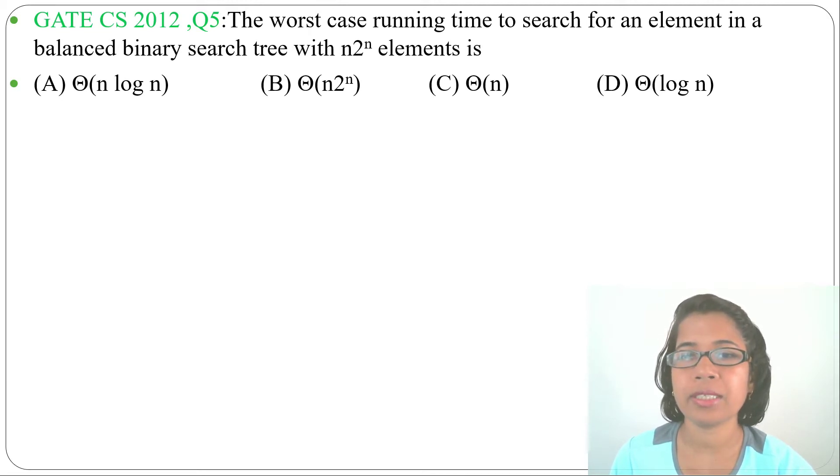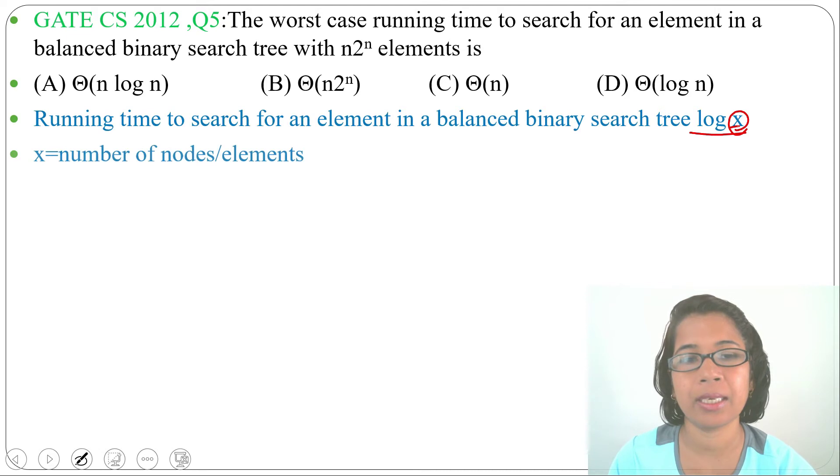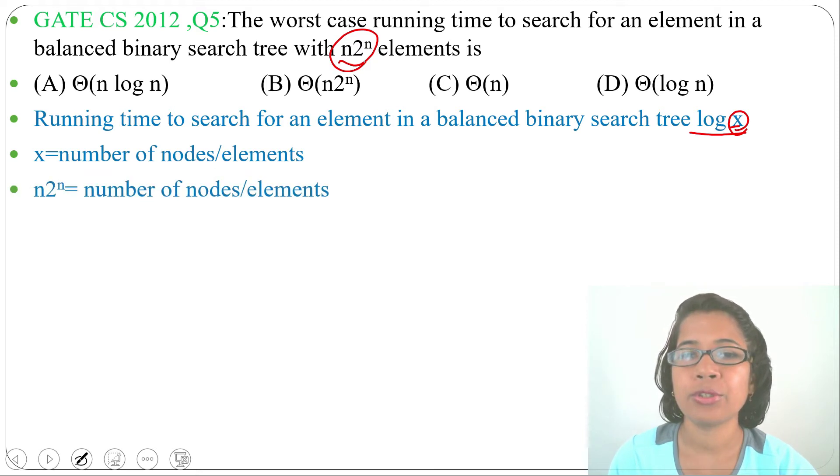We know worst case running time to search for an element in a balanced binary search tree is log of x. What is x here? This x is number of nodes or number of elements. And in the question, the number of elements is n×2^n.